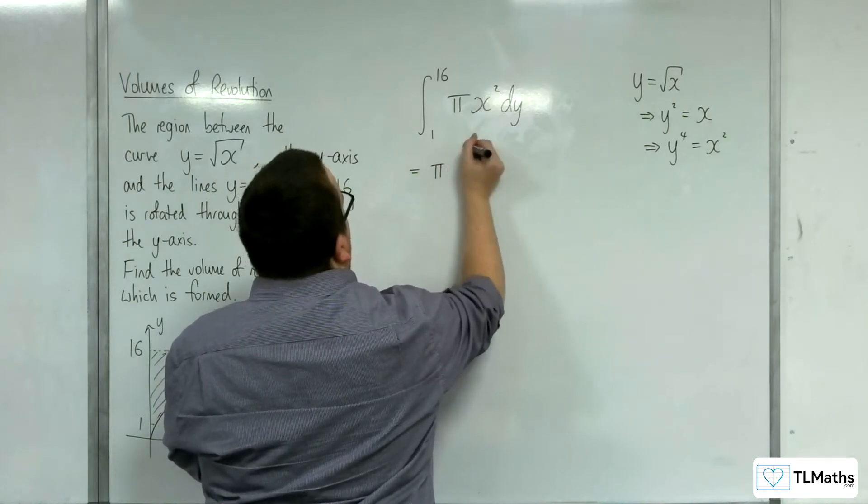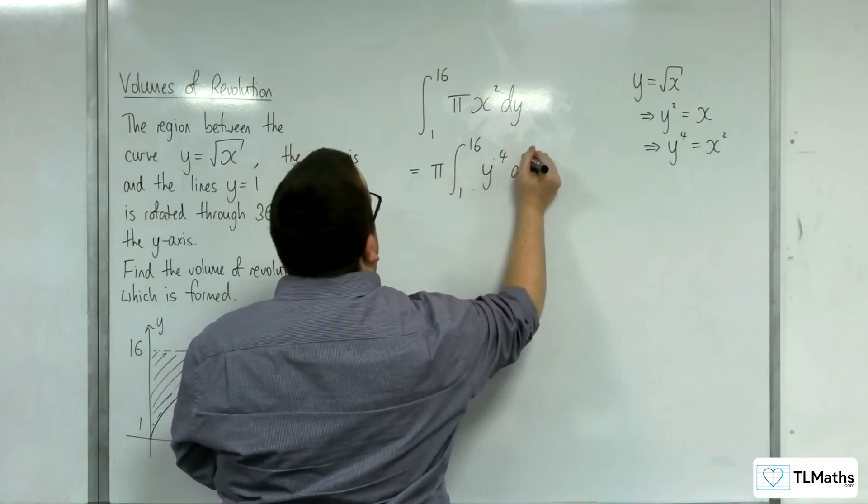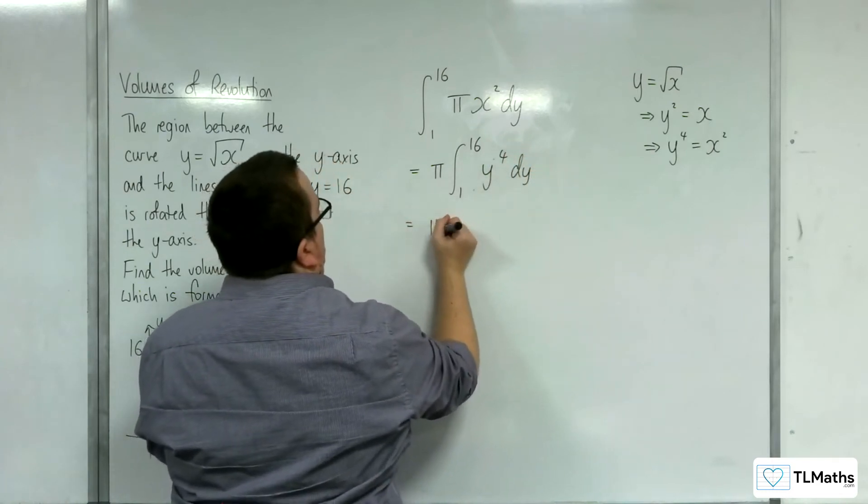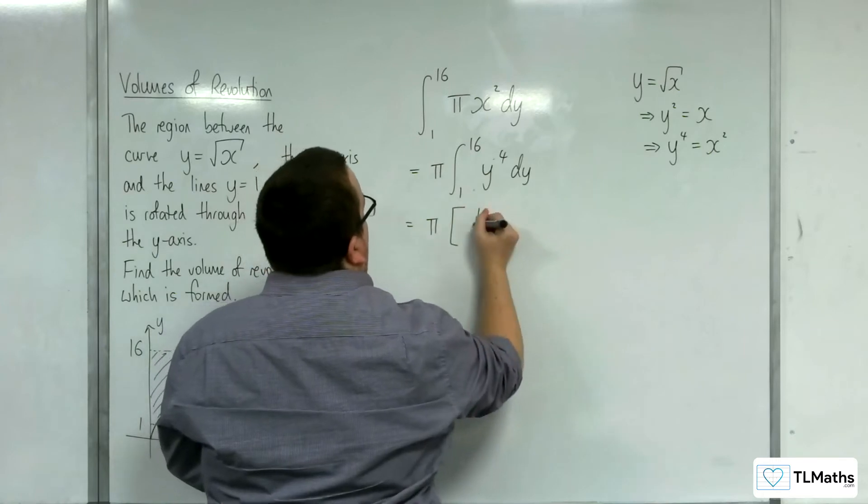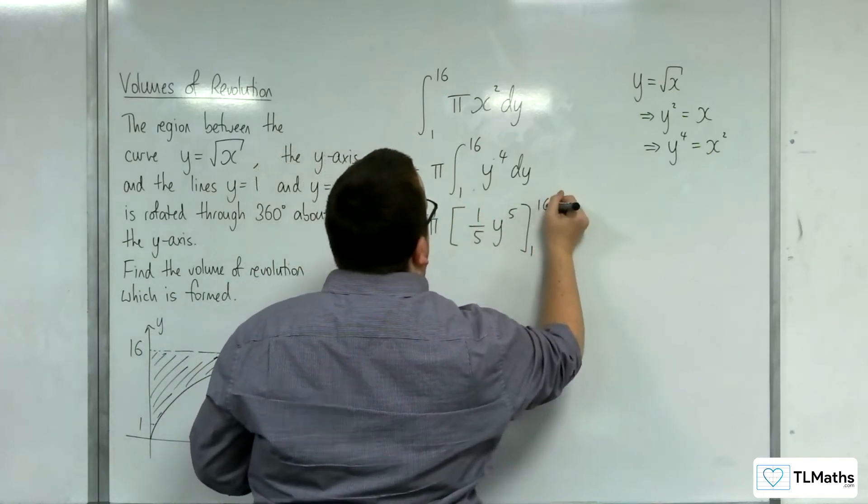So, I'm going to bring the pi outside of the integral, and we're going to have y to the 4 dy. So, now integrate. So, we'll have 1 fifth y to the 5 evaluated between 1 and 16.